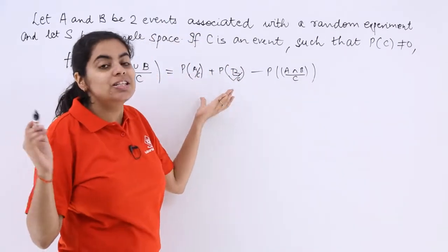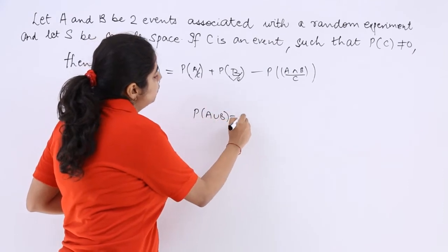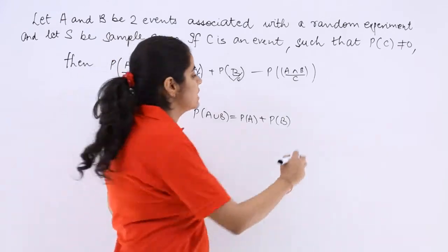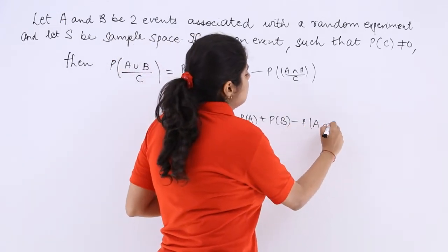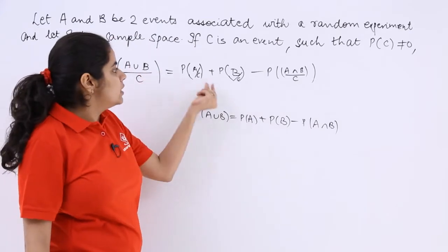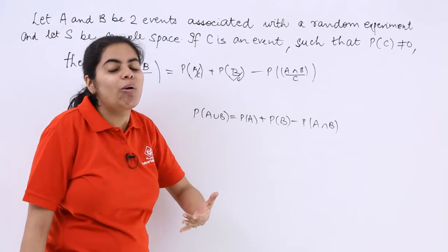And last but not the least, just as we had probability of A union B is equal to probability of A plus probability of B minus probability of A intersection B. Similar to that, when there is union, probability of A will be there, B will be there. You will just have in the denominator C.